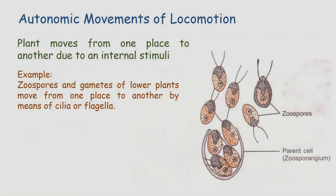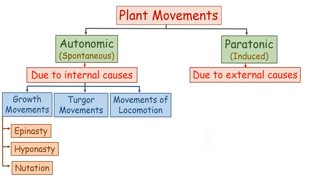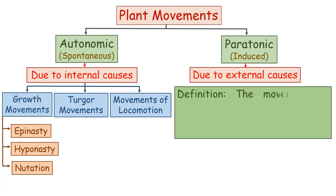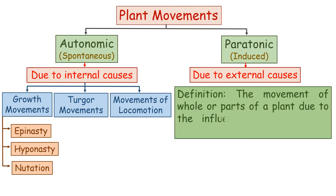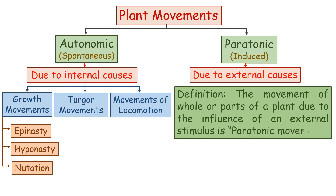Third, movements of locomotion. In this case, the plant moves physically from one place to another due to an internal stimulus. Zoospores and gametes of lower plants move from one place to another by means of cilia or flagella. The movement of the whole or parts of a plant due to the influence of an external stimulus is paratonic movement.